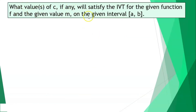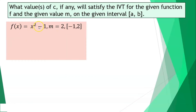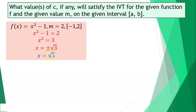What values of c, if any, will satisfy the IVT for the given function and value of m on the interval a, b? For example, f of x is x squared minus 1, m is 2, and the interval is negative 1 until positive 2. Setting x squared minus 1 equal to 2, transferring 1 to the other side gives 3. Getting the square root of both sides, x equals positive and negative square root of 3. The value for c is only positive square root of 3 because it is within negative 1 and positive 2, but negative square root of 3 is outside the interval.